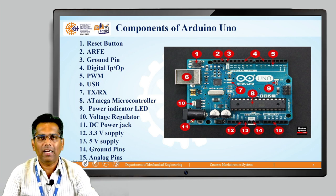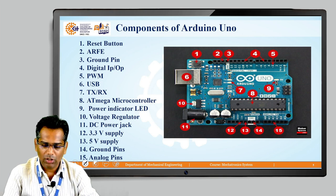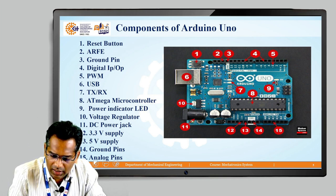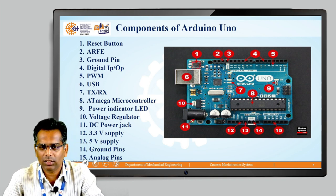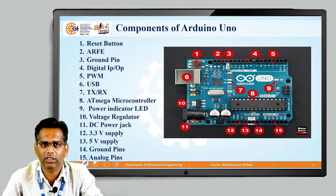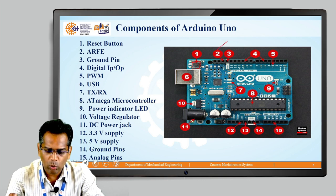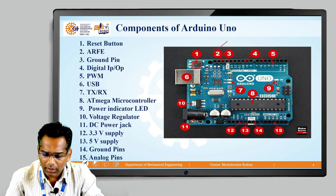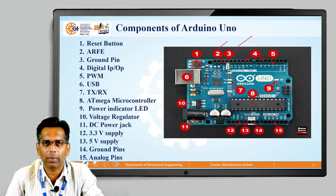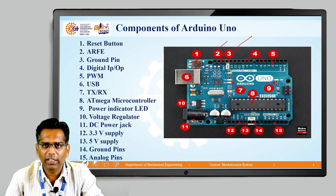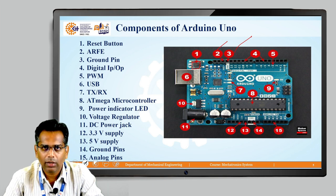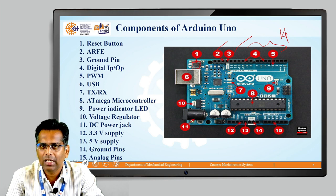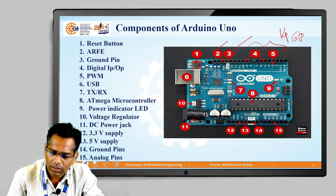Now we are going to see the different components available on the Arduino Uno board. Number 1 is the reset button, used to reset the Arduino when there is a problem with the program. Number 2 is AREF, the analog reference, which gives the analog reference line when connecting analog circuits. Number 3 is the ground pin for the negative supply. Number 4 is the digital input-output pin — there are 14 in total, with 6 of them being PWM pins.